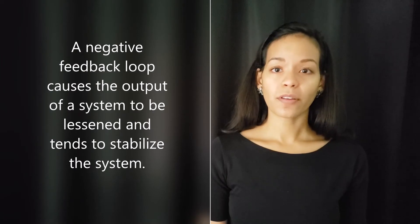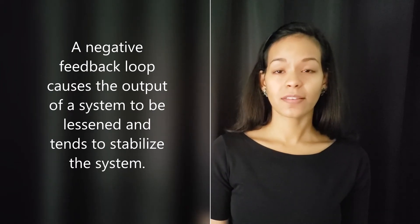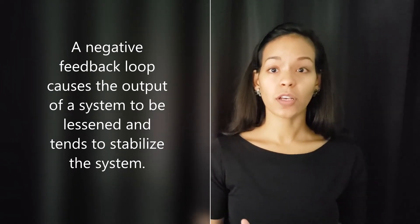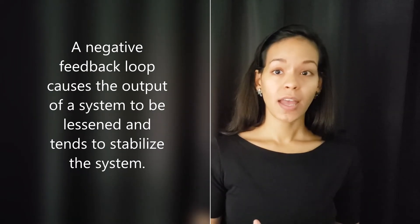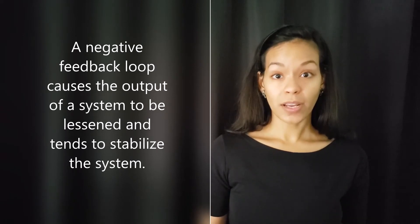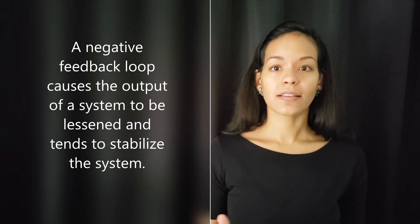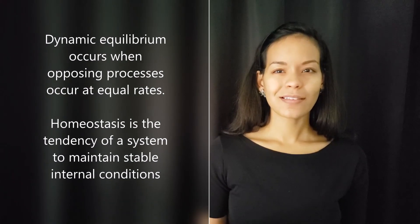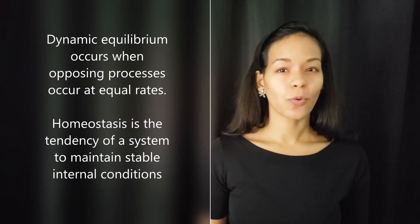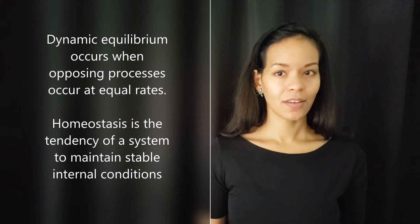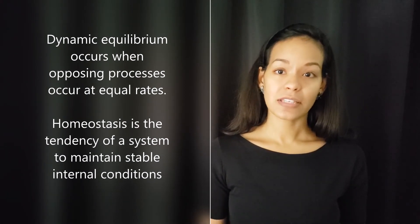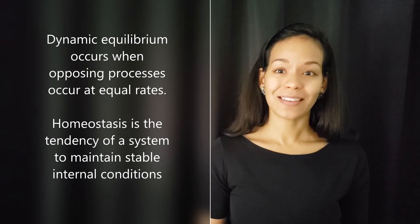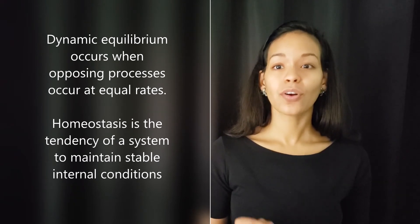When processes in a negative feedback system move in opposing and equal rates, then the system is in dynamic equilibrium. This contributes to homeostasis, which is the tendency of a system to maintain stable internal conditions.